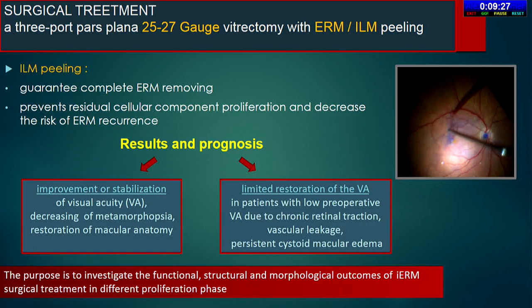Surgical removal of IRM and ILM is usually performed using 25–27 gauge vitrectomy. During surgery, both the IRM and the ILM must be removed from the retinal surface in order to release the traction on the macula. Surgery for IRM improves or stabilizes visual acuity, decreases metamorphopsia, and restores macular anatomy.